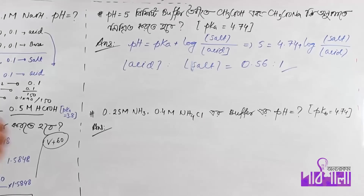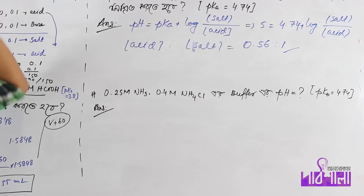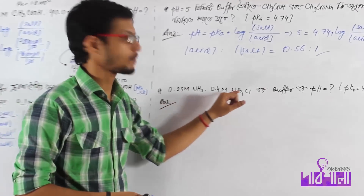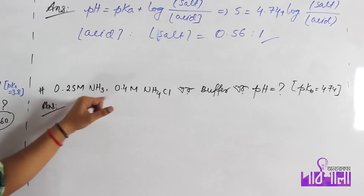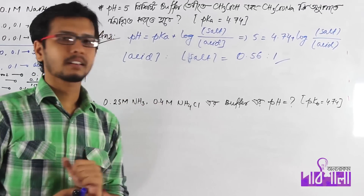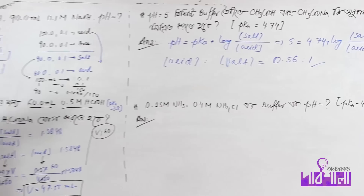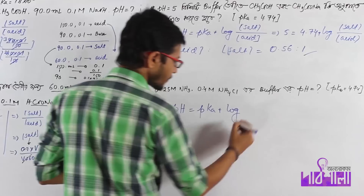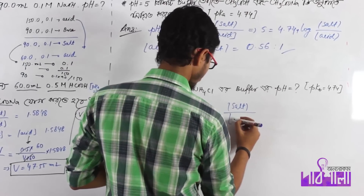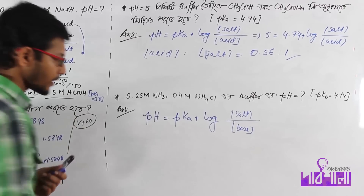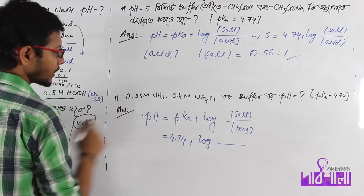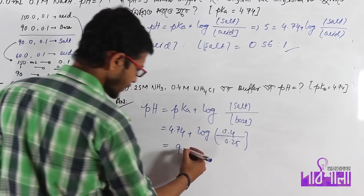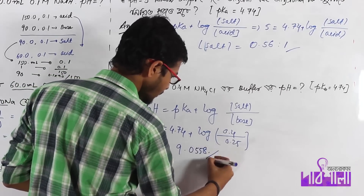This is quite simple. We can start with this as a basic buffer. The buffer is a basic buffer with ammonium hydroxide. We can add ammonium hydroxide. So again, Henderson-Hasselbalch equation: pOH is equal to pkb plus log concentration of salt divided by concentration of base. pkb is 4.74, plus log of salt concentration 0.4 divided by base 0.25. So ultimately we calculate pH = 9.0558.